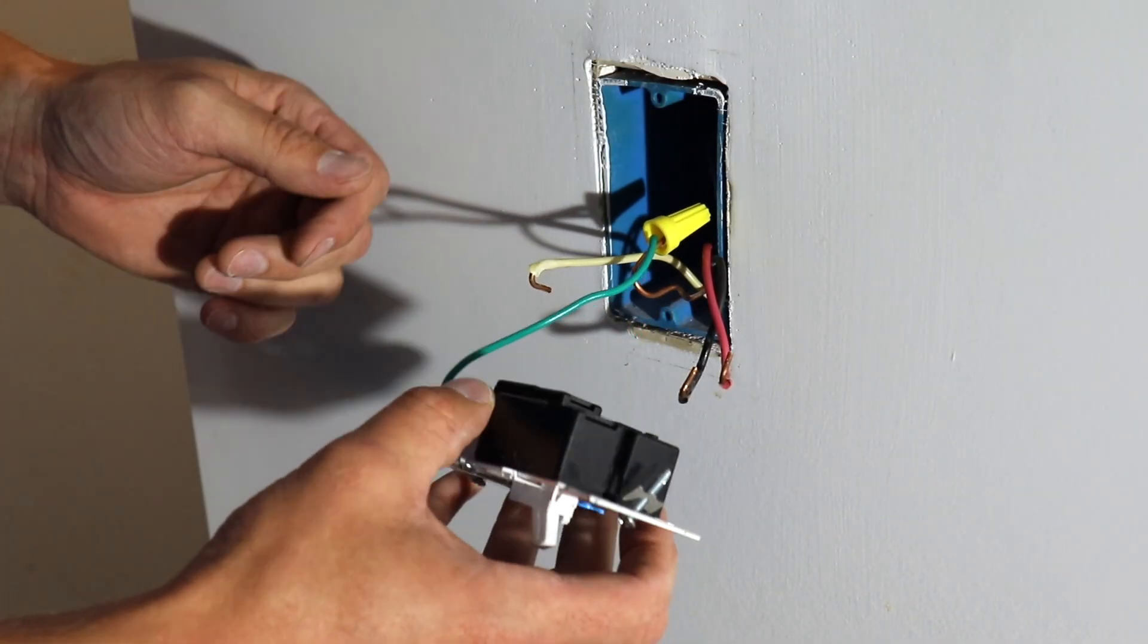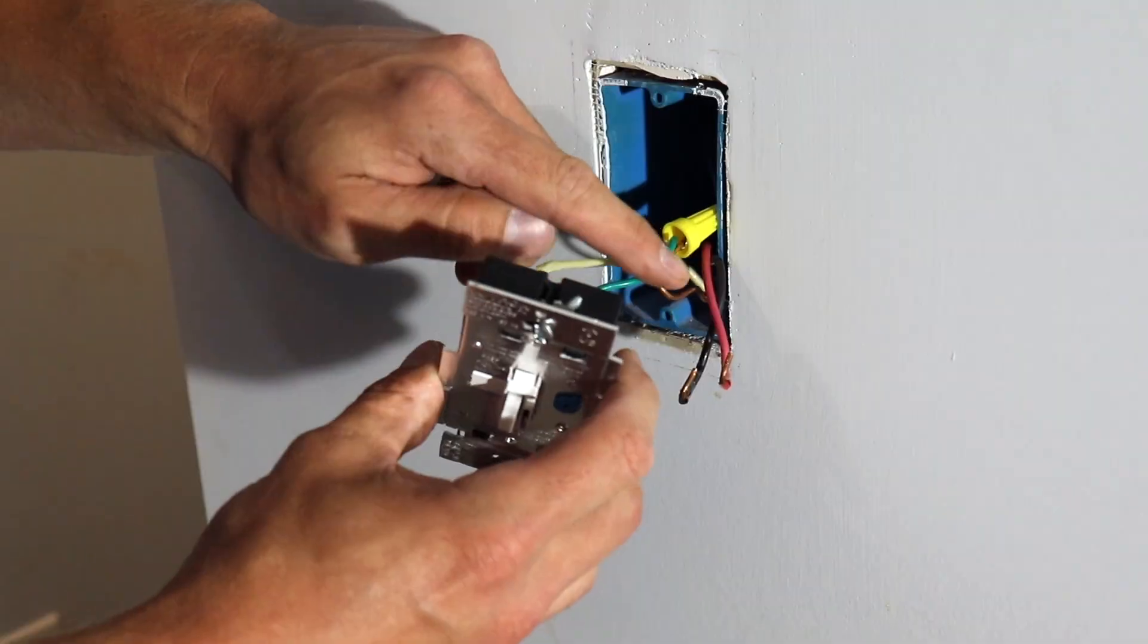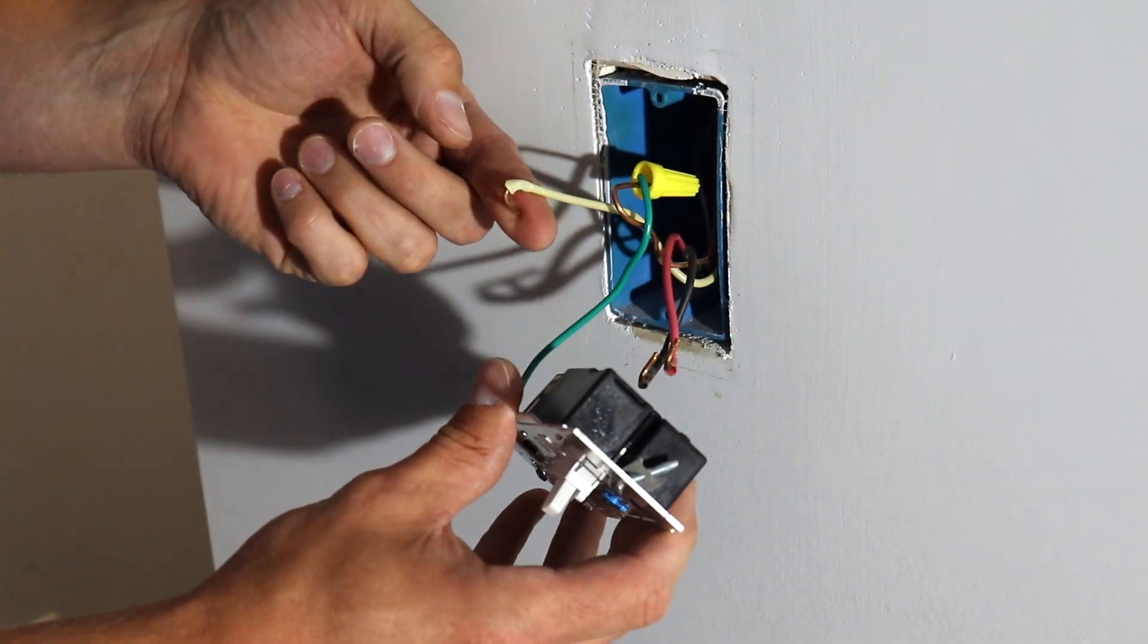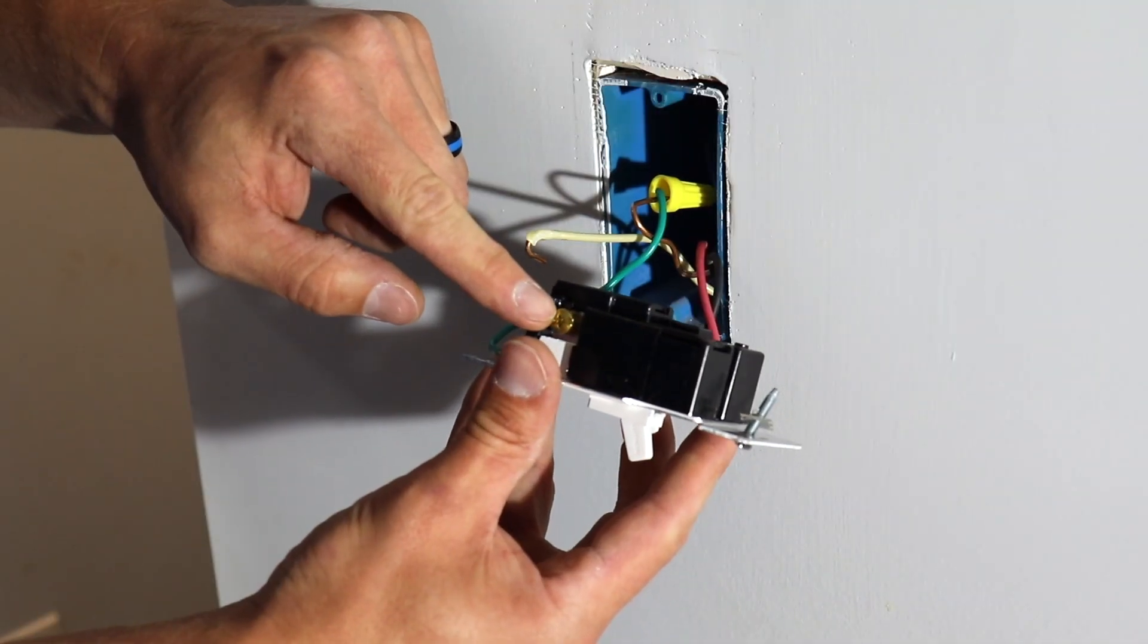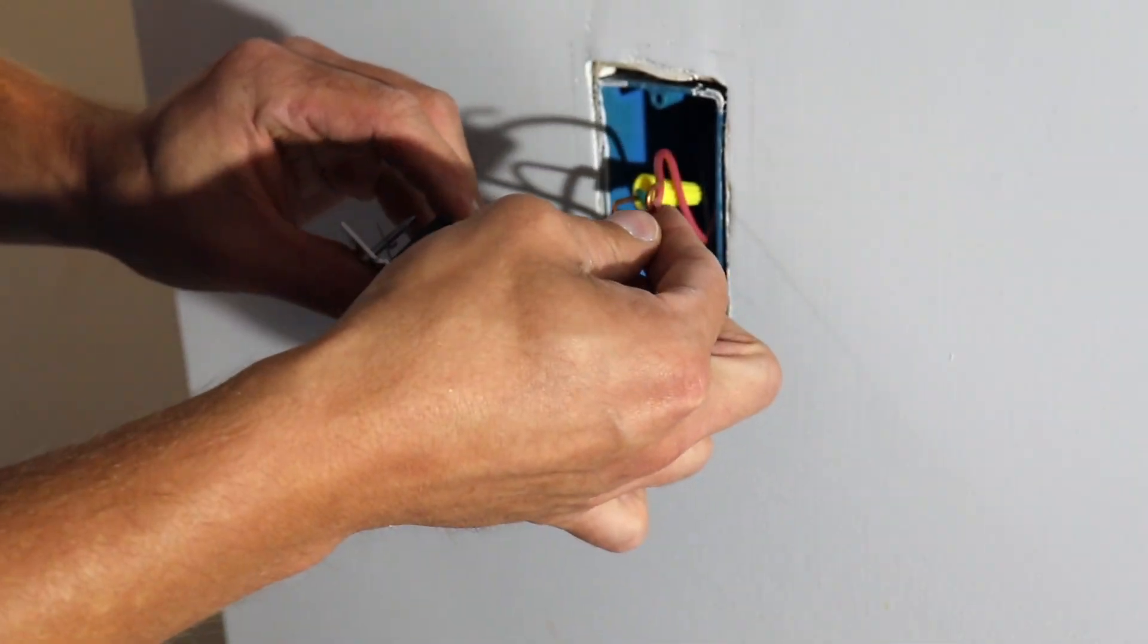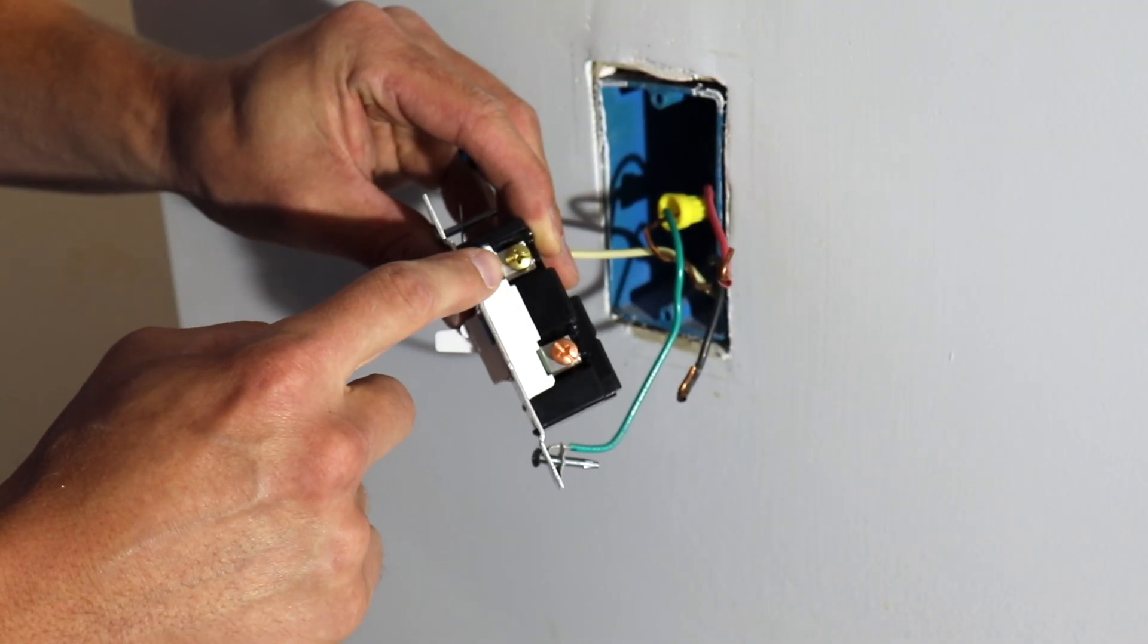All right. Now that that's done, we're going to go ahead and hook our traveler wires up. And so in this case, we have a white traveler wire going on this brass terminal, and the red traveler wire is going to go on this brass terminal.